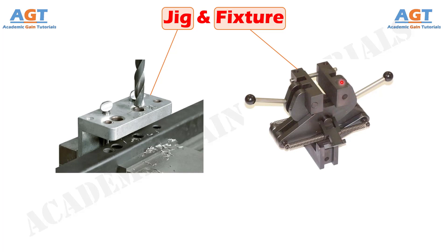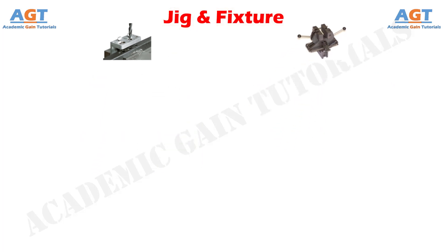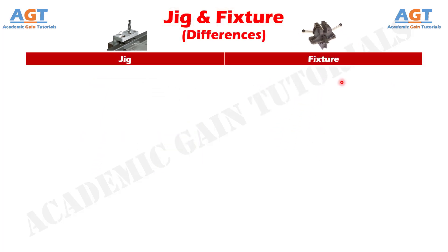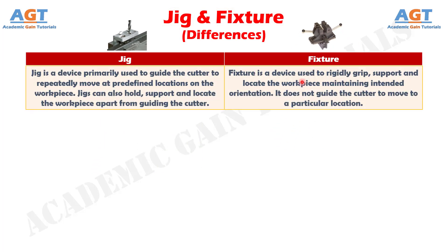Let's look into the basic differences between jig and fixture in a tabular form. Difference number 1: A jig is a device primarily used to guide the cutter to repeatedly move at predefined locations on the workpiece. Jigs can also hold, support and locate the workpiece apart from guiding the cutter, whereas a fixture is a device used to rigidly grip, support and locate the workpiece maintaining intended orientation. It does not guide the cutter to move to a particular location.